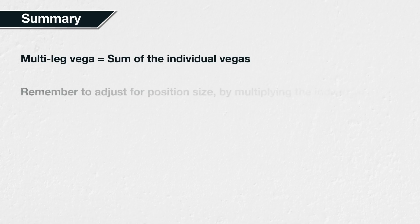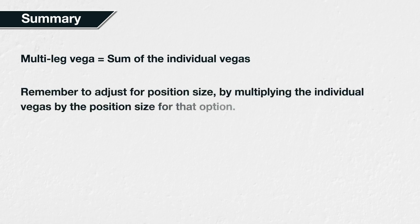In summary, the vega of a multi-leg option strategy is equal to the sum of each of the vegas for the individual options it contains. Remember to also adjust for the position size by multiplying the vega of the option by the position size.